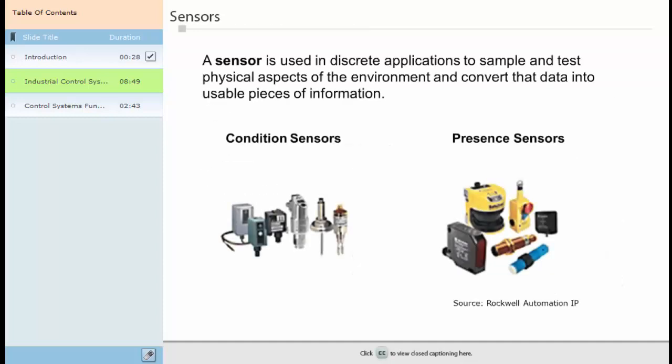Sensors are used to sample and test physical aspects of the environment around us and convert that data into usable pieces of information. For example, a load sensor can calculate the weight of a moving 18-wheel truck at a weigh station on the highway, and this information may be amalgamated with many other weight measurements from other vehicles and used to calculate the approximate wear and deterioration of the highway over a specified period.